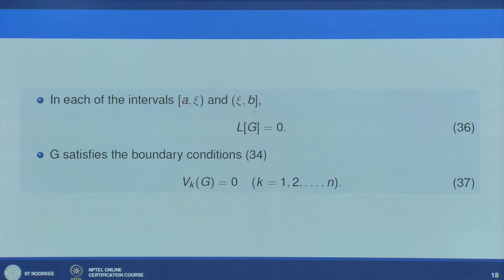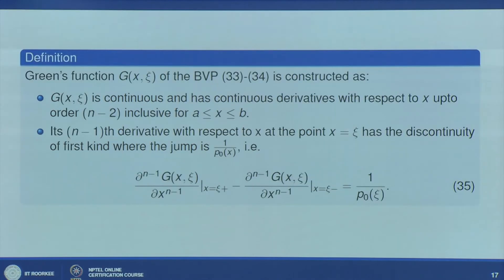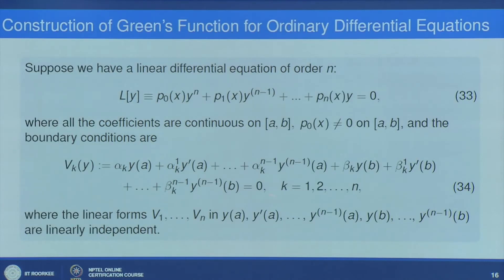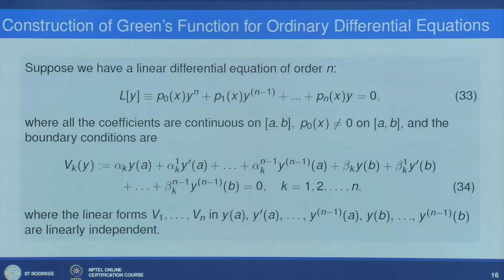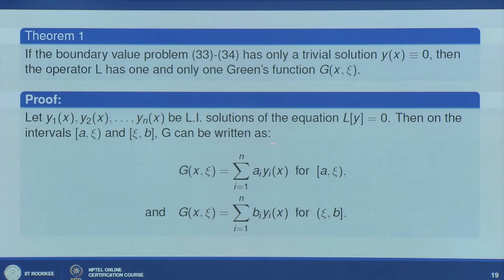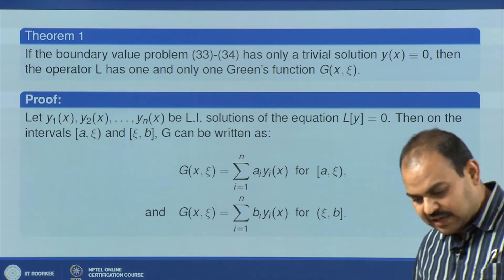The Green function conditions are: (1) g(ξ,x) and its derivatives up to order n−2 are continuous on [a,b]; (2) its (n−1)th derivative has a jump discontinuity of magnitude 1/p₀(ξ); (3) g satisfies L g = 0 when ξ ≠ x, i.e., in each interval (a,ξ) and (ξ,b); (4) g satisfies the boundary conditions Vₖg = 0. A theorem states: if the boundary value problem has only a trivial solution, the operator L has one and only one Green function.